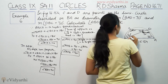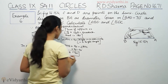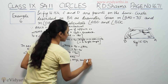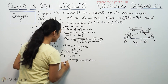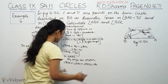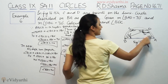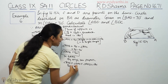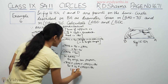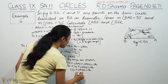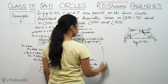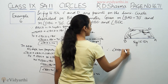In triangle ABD, angle ADB plus angle ABD plus angle BAD equals 180 degrees. We found ADB is 50 degrees, and BAD is given as 70 degrees. So 50 plus 70 plus angle ABD equals 180, meaning angle ABD equals 180 minus 120, which is 60 degrees.